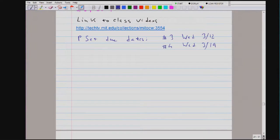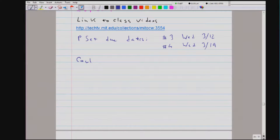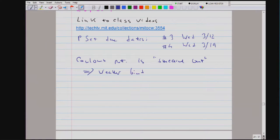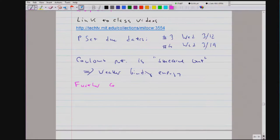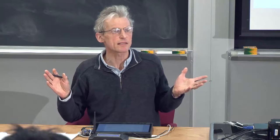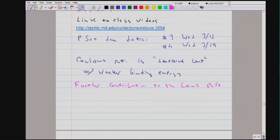We have discussed the Lamb shift, but we have only discussed one contribution: the Coulomb potential is effectively smeared out, resulting in weaker binding energy. However, there is a second contribution to the Lamb shift. I've sometimes seen sources where this is discussed as the main contribution, but this is not correct — it is only 3% of the total and contributes 20-something megahertz.